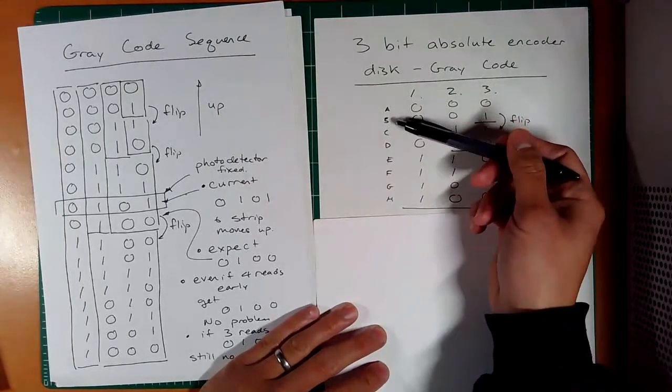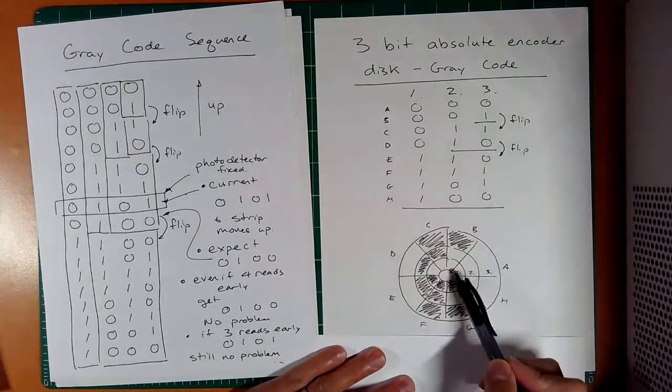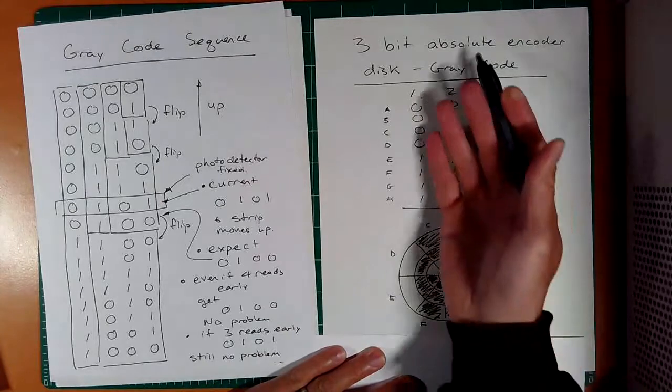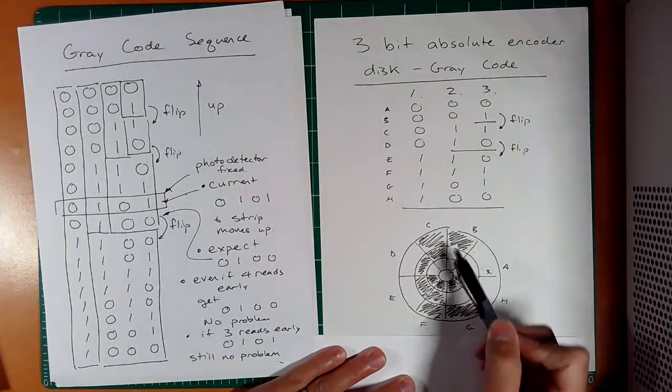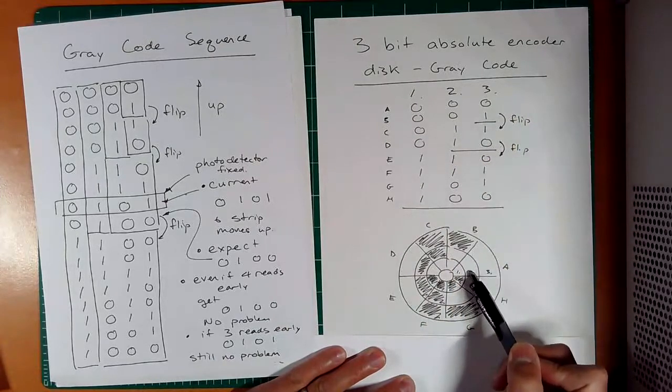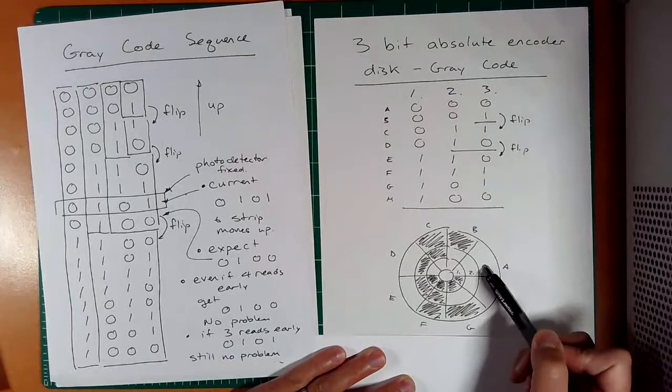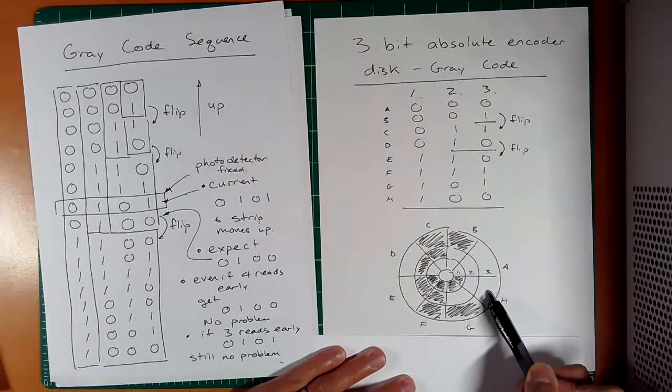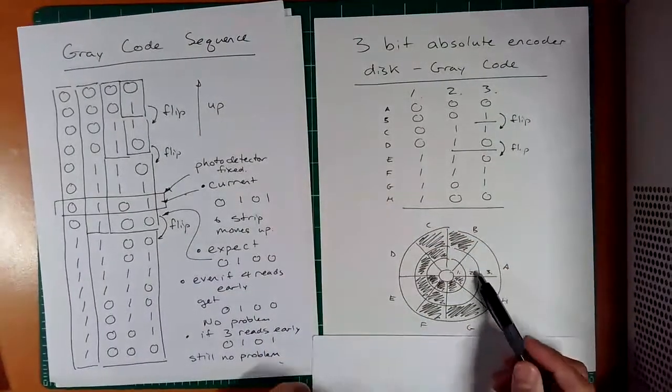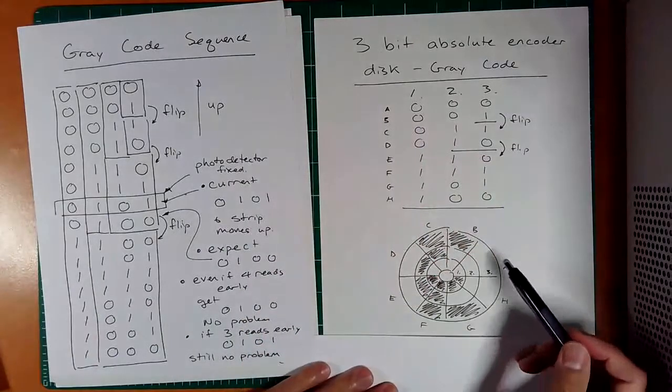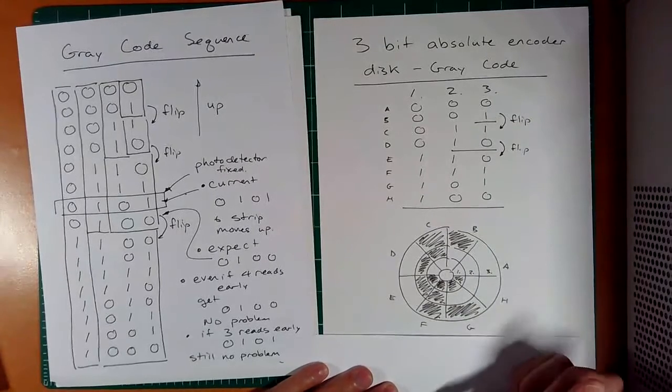And look at column 1 here. All zeros, all ones. All zeros, all ones. 2 is 0, 0 and then 4 ones. Good. And then 0, 0. And then column 3 has 0, then 1, 1, then 0, 0, then 1, 1, 0. And so you can imagine this case, I have three photo detectors and LEDs. And I could rotate this dial and I could see that I would get an absolute reading because at any of these segments, I would know where I'm at.